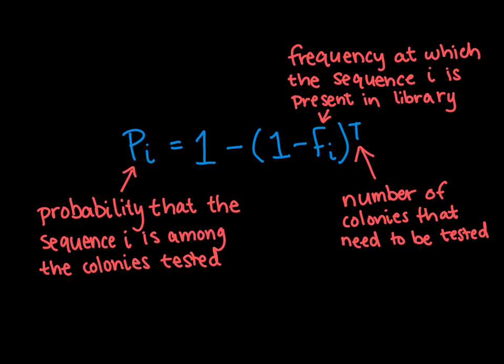Once you have made your mutants you'll want to calculate how many colonies you must screen to test each different mutant. To do this we're going to use the following equation: pi equals 1 minus the quantity of 1 minus fi to the exponent of t. In this equation pi is the probability that the sequence i is among the colonies tested, fi is the frequency at which sequence i is present in the library, and t is the number of colonies that need to be tested.